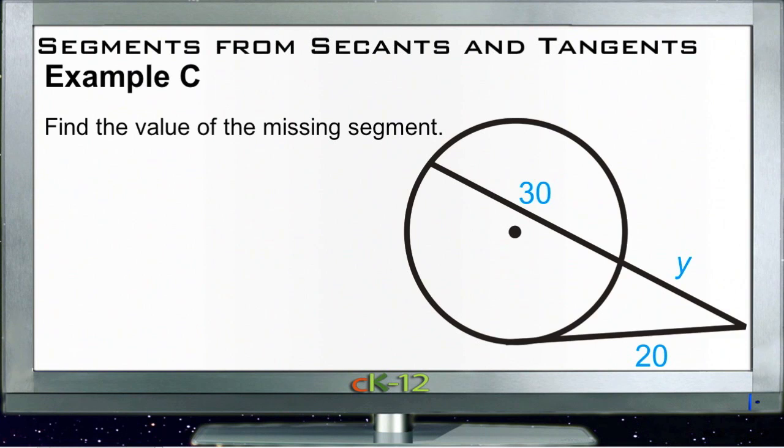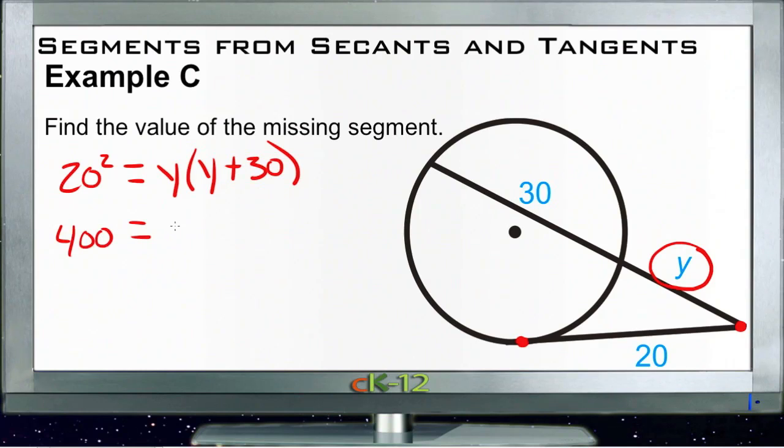And then Example C, again find the value of the missing segment. Now this time we're not missing the segment that's on the tangent line, we're missing one of the parts on the secant line. So we're going to have 20 squared is equal to y times y plus 30.